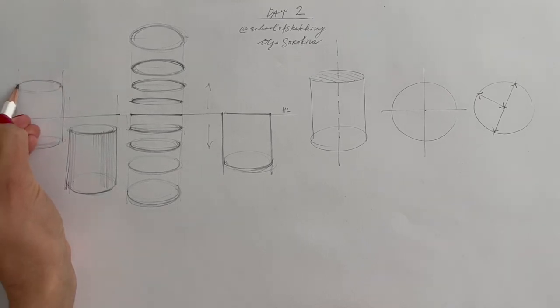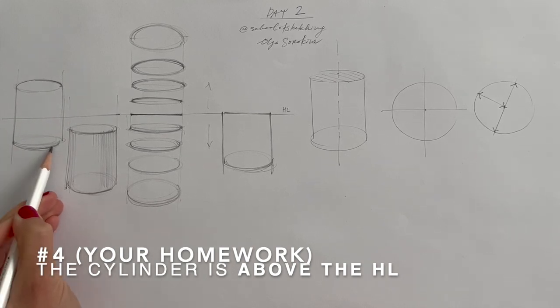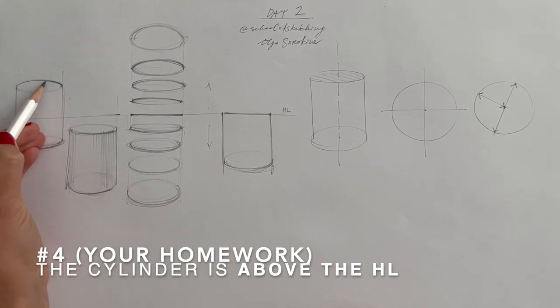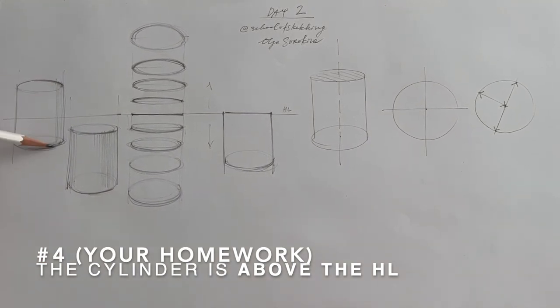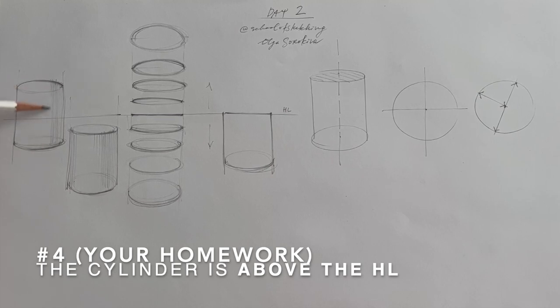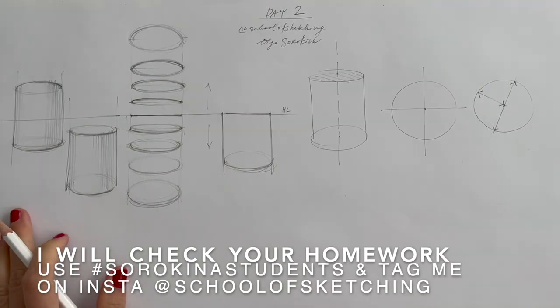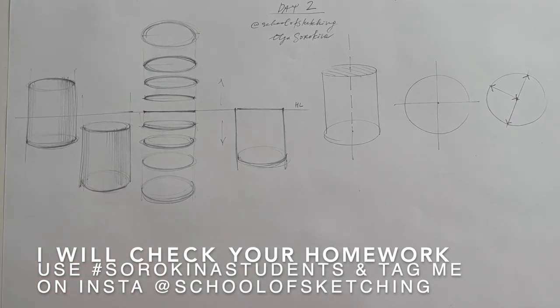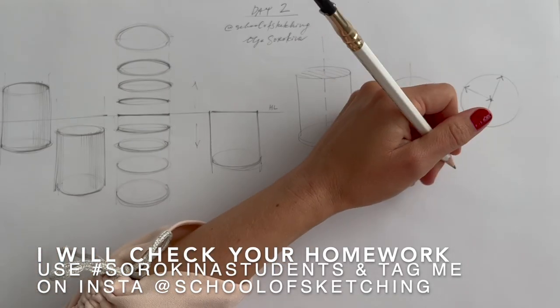And I have homework for you. Let's draw a scenario number four. So you draw the cylinder above the horizon line. So the top plane and the bottom plane, top circle and the bottom circle, the entire cylinder is hanging above the horizon line. So you tag me on Instagram at School of Sketching and put the hashtag Sorakina students so I can see your fourth scenario.